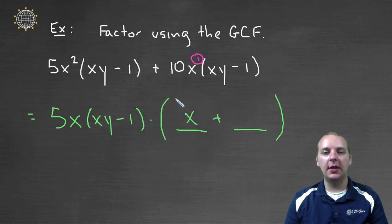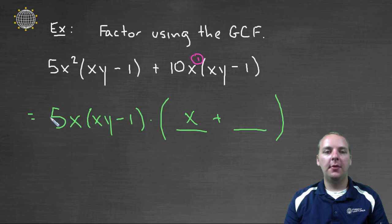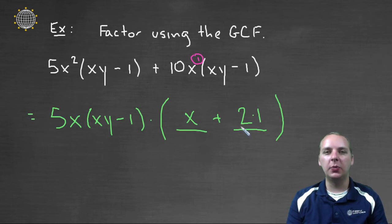This is a plus, then this will stay a plus here. Five times what gives you 10? We just have a 2. And x times what would give us x? That's just times 1. But I don't really need to write the times 1, because 2 times 1 is still 2.